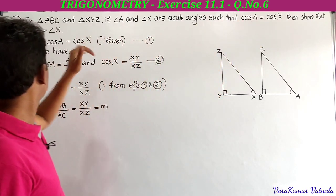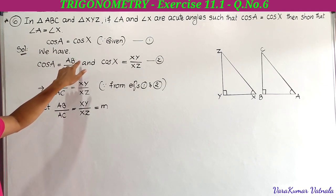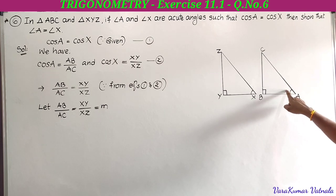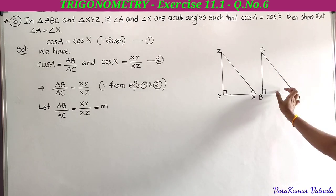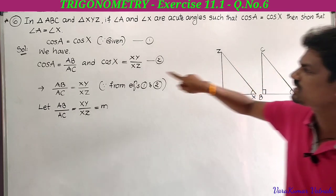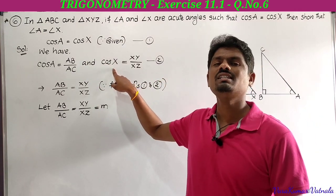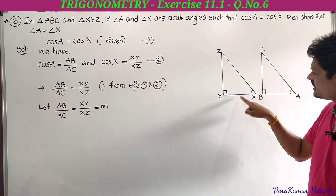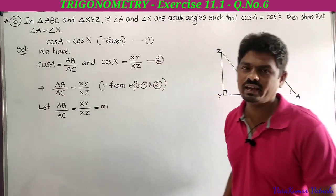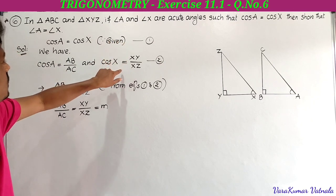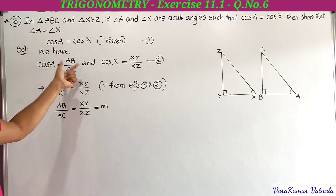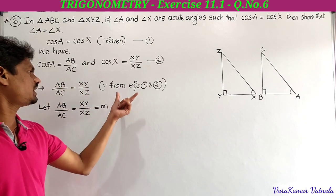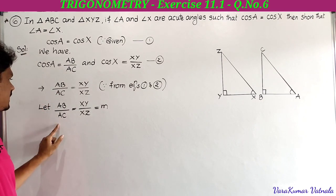Cos A equals cos X is given (equation 1). Cos A from triangle ABC equals adjacent side by hypotenuse, which is AB by AC. Cos X from triangle XYZ equals adjacent side to angle X by hypotenuse, which is XY by XZ (equation 2). From equations 1 and 2, AB by AC equals XY by XZ.